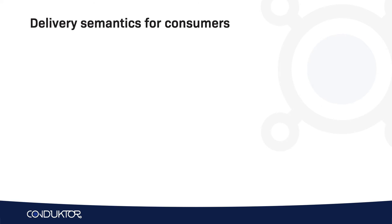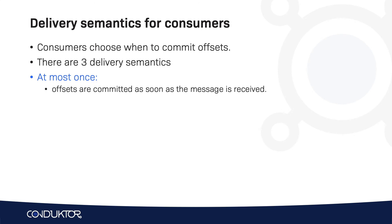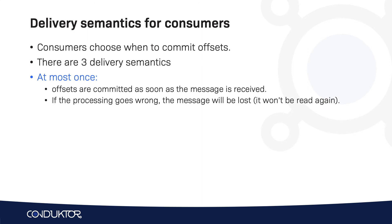There are different strategies for committing offsets — about three delivery semantics for consumers. The first is at most once: you commit offsets as soon as the message is received. If processing goes wrong or the consumer crashes after committing, the messages will be lost and won't be read again, because Kafka treats committed offsets as acknowledgment that messages have been processed.